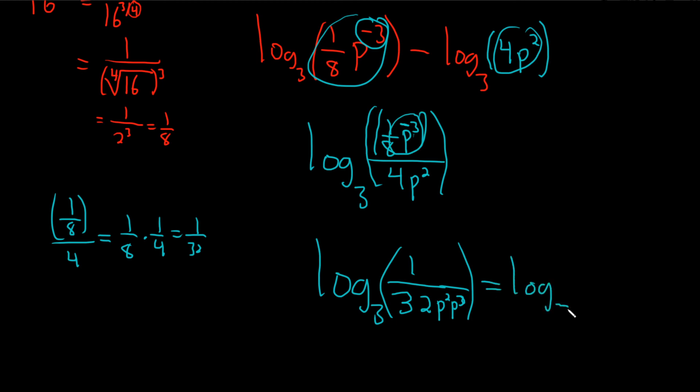So this is log base 3 of 1 over 32. And then, what happens is you do P squared times P cubed. So you add the P's. So you get P to the 5. And that would be the final answer.